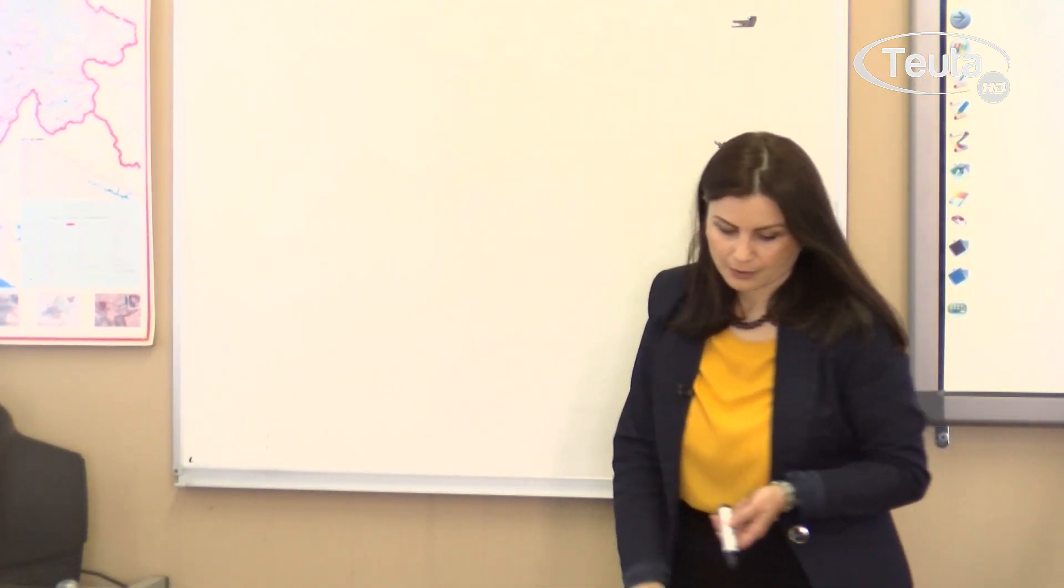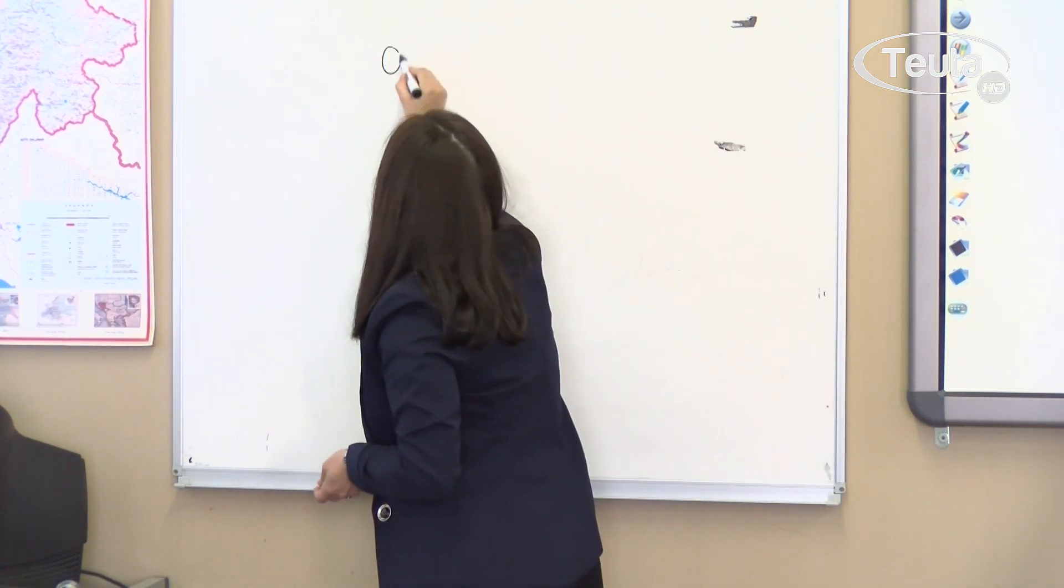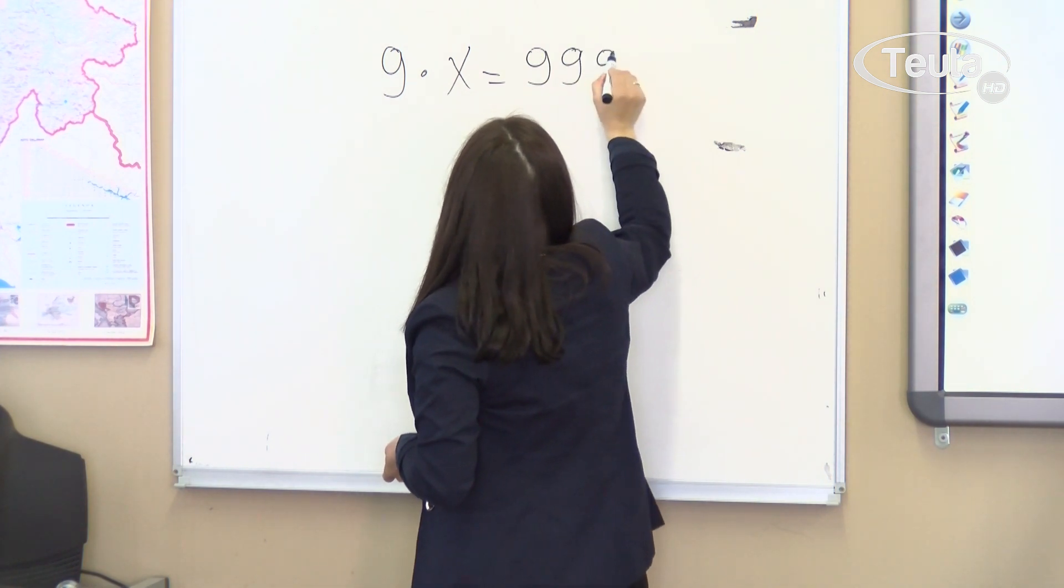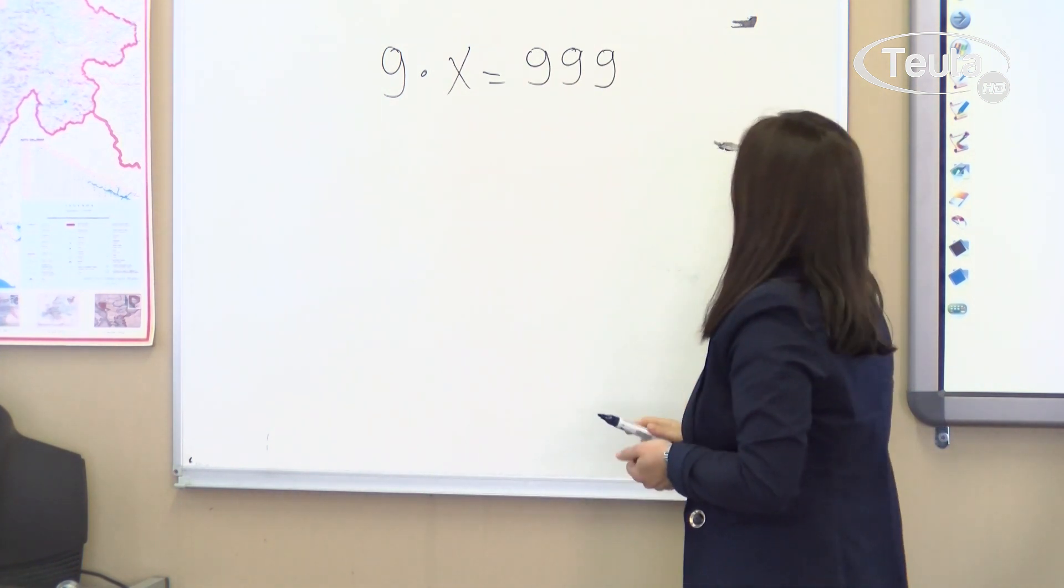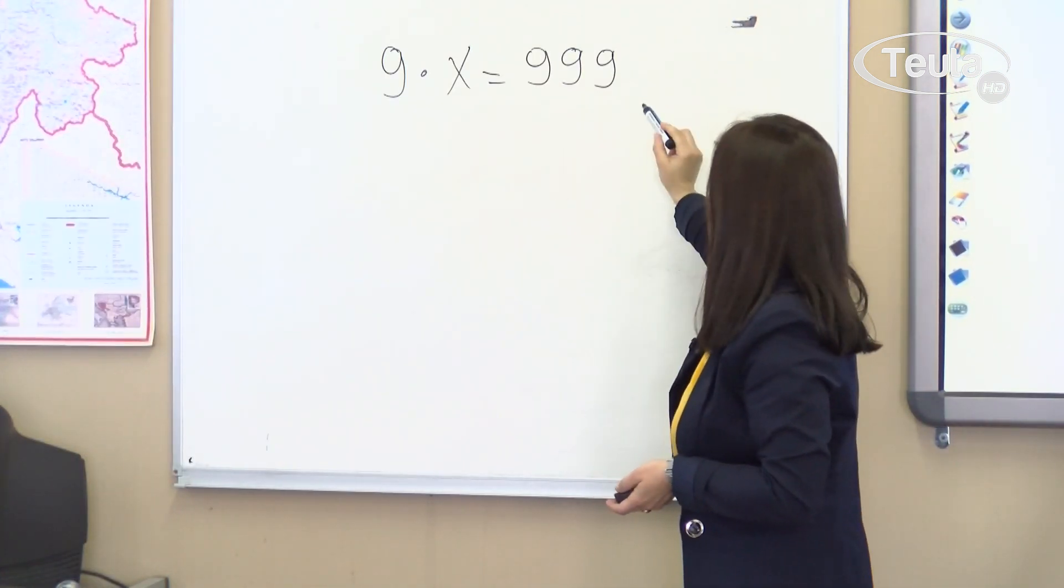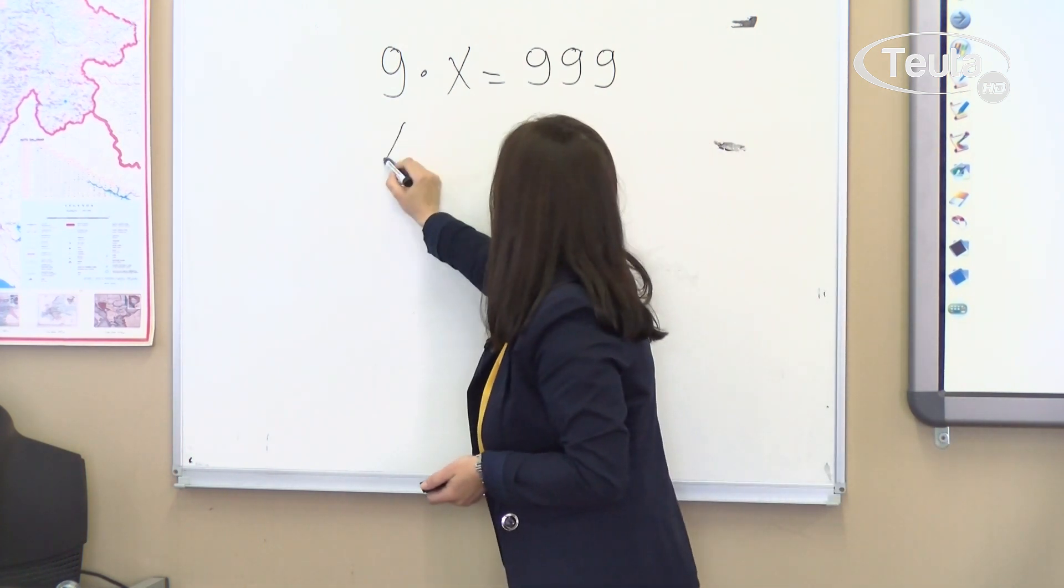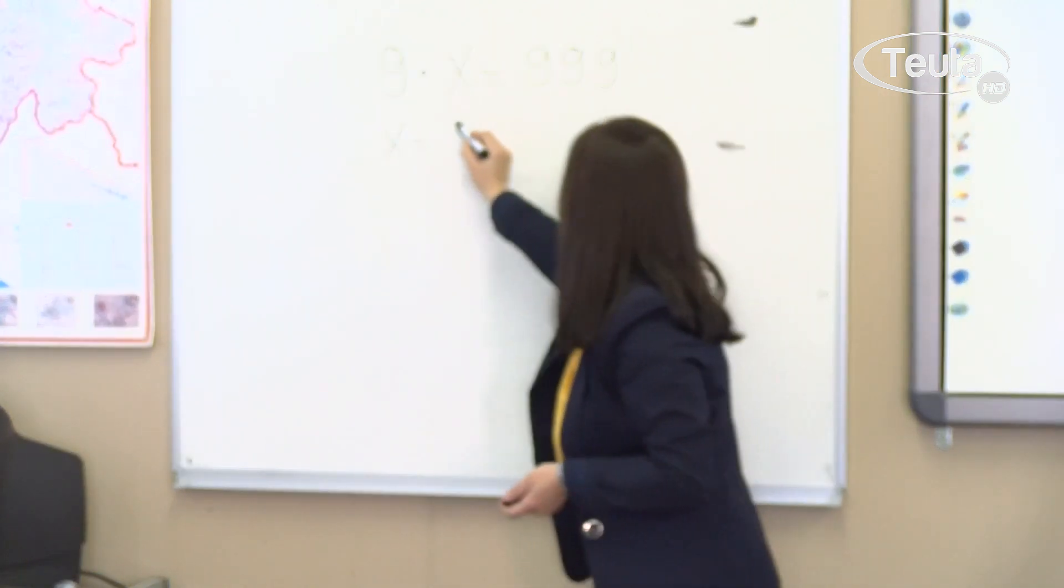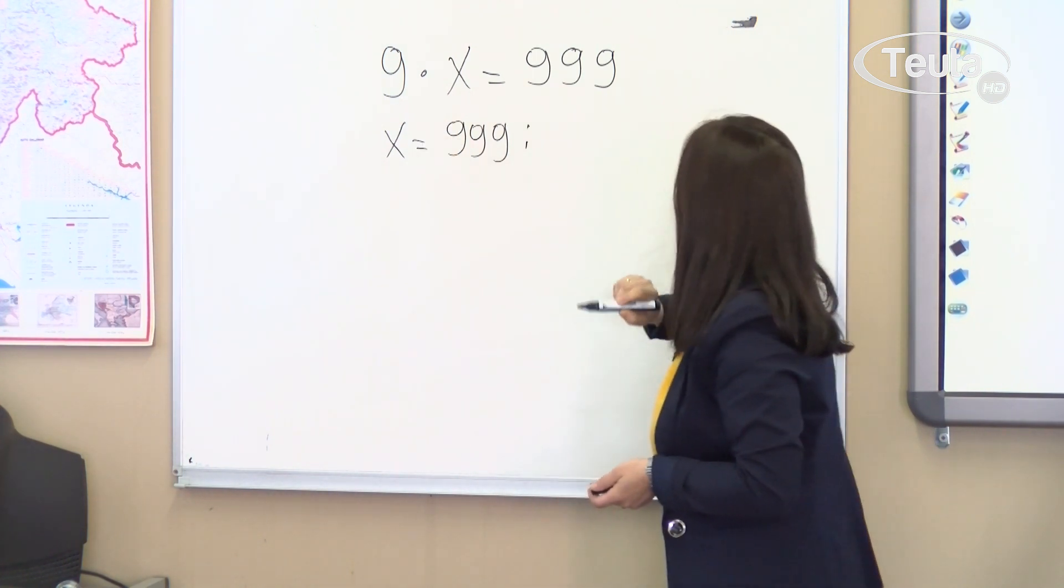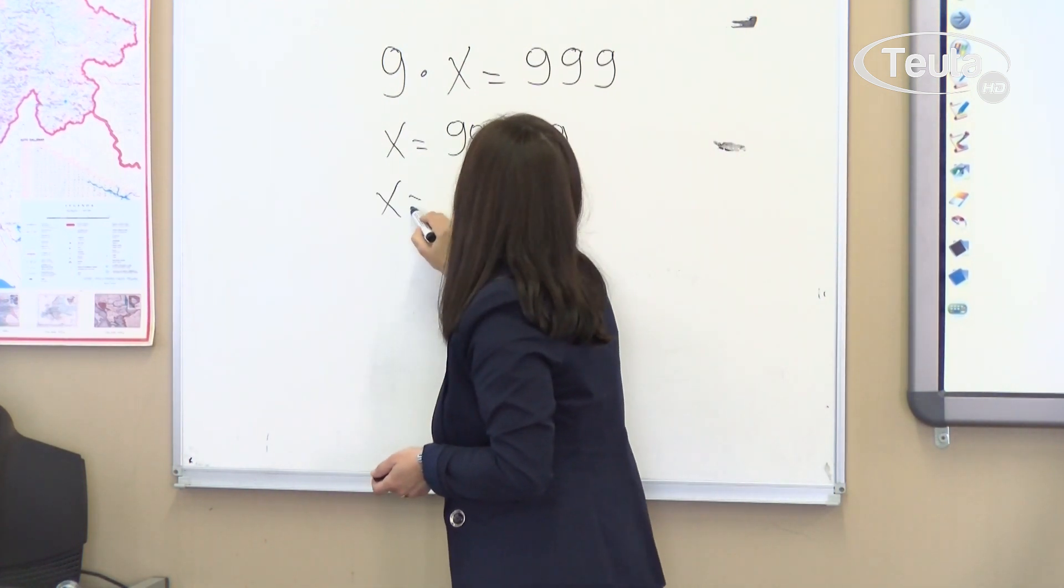Let's solve the first equation. The first equation says 9 times x equals 999. Let me remind you, when we have multiplication in an equation, then x is solved by dividing. What do we divide? Let's see: x equals, we divide the product 999 by the first factor 9.